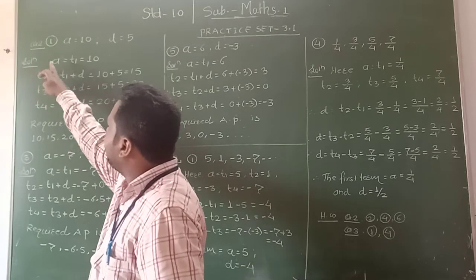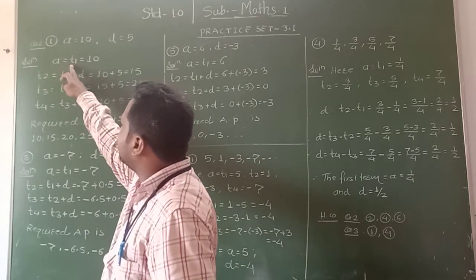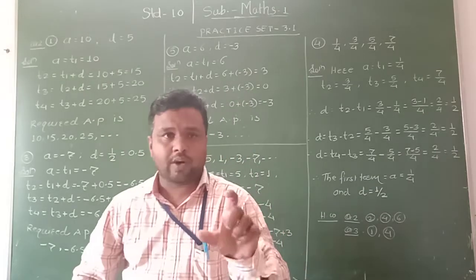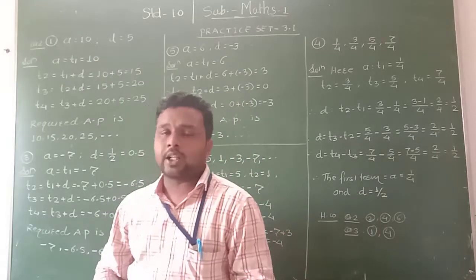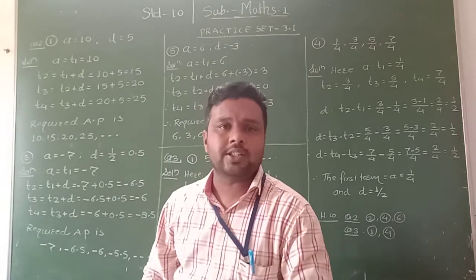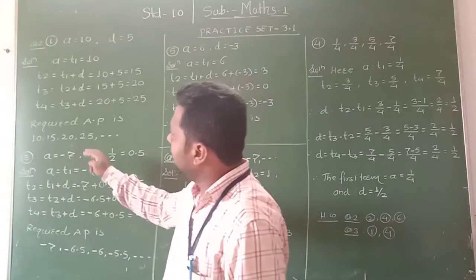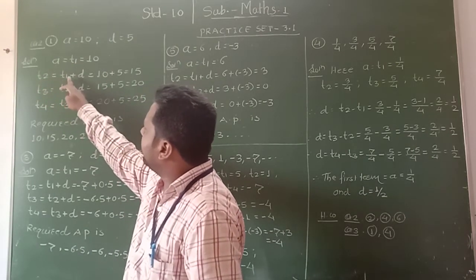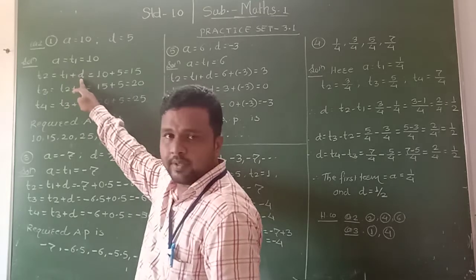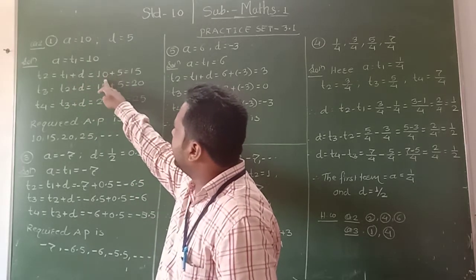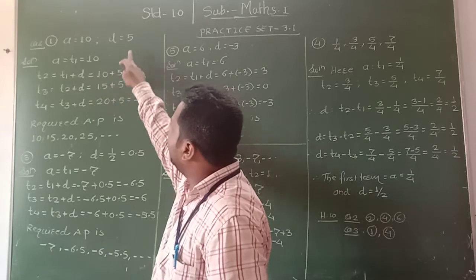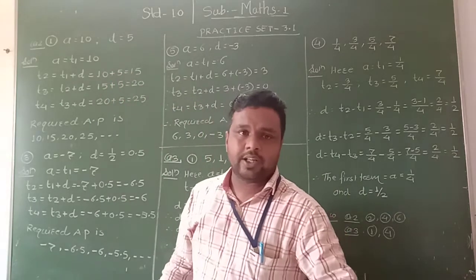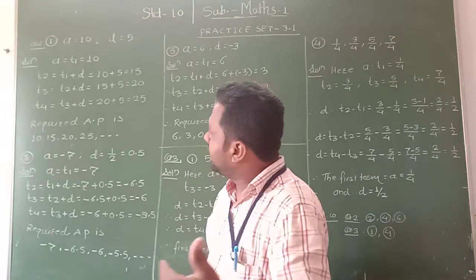In the solution, the first term T1 is equal to 10. To find the second term of the arithmetic progression, you have to add the common difference to the previous term. Therefore, T2 is equal to T1 plus D, which is 10 plus 5, equal to 15. In this way we get the second term of the arithmetic progression.